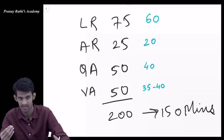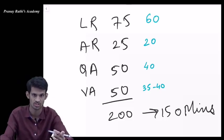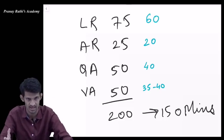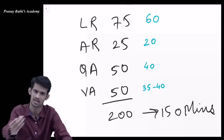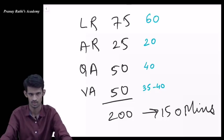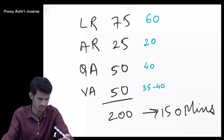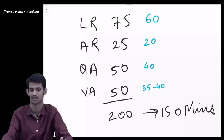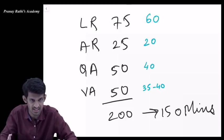If any candidate has logical reasoning, abstract reasoning, and quants totaling 140 marks, and verbal ability only 10 marks, suppose 150 total, that would be a very good score. Because there's no sectional cutoff for 2017, 2018, and 2019. This is the advantage you should leverage.